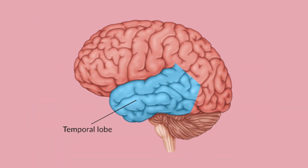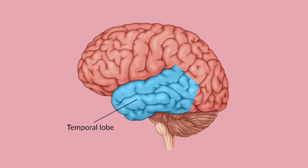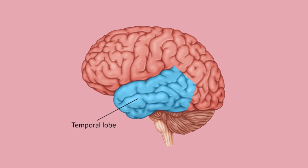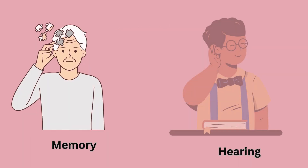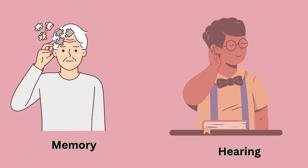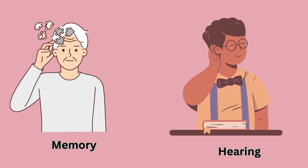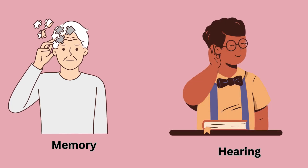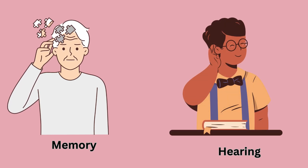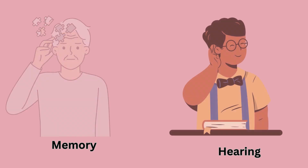The temporal lobe, found beneath the temples, deals with memory and hearing. It helps us recognize sounds, spoken language, and familiar faces.